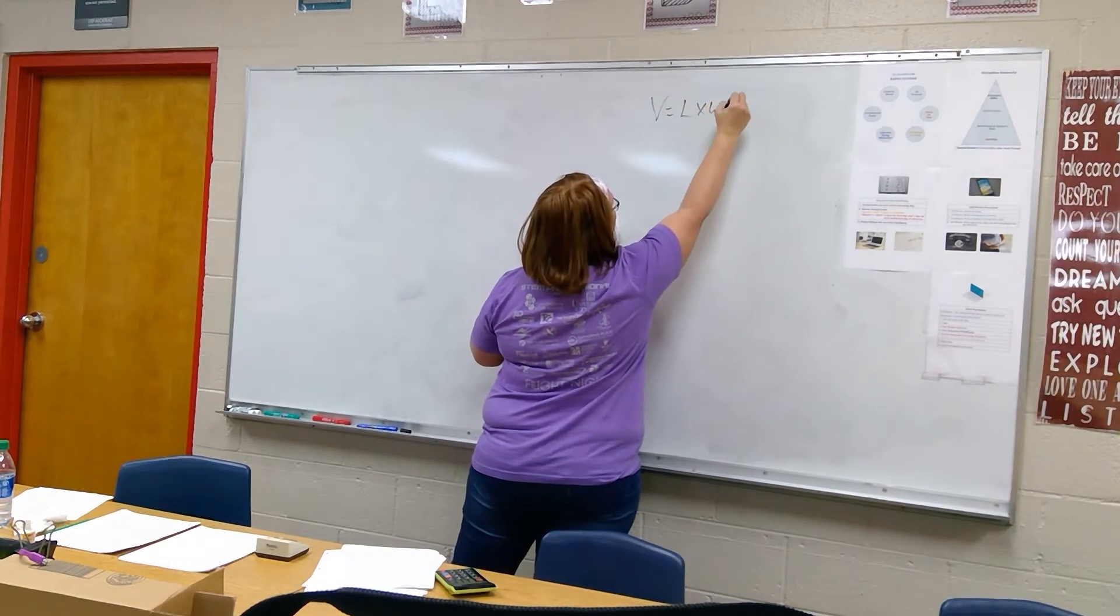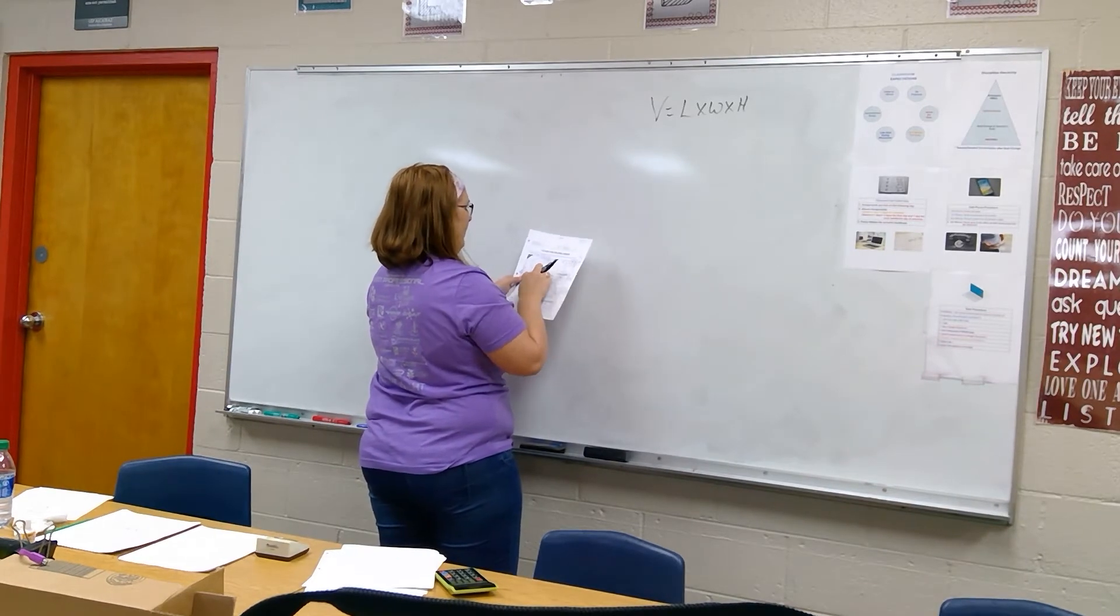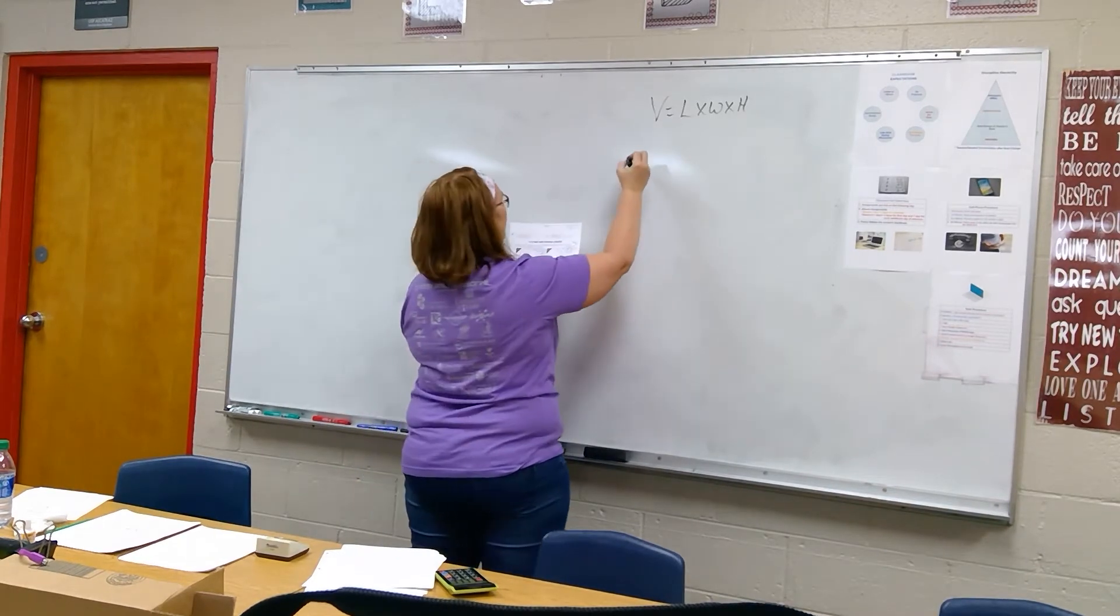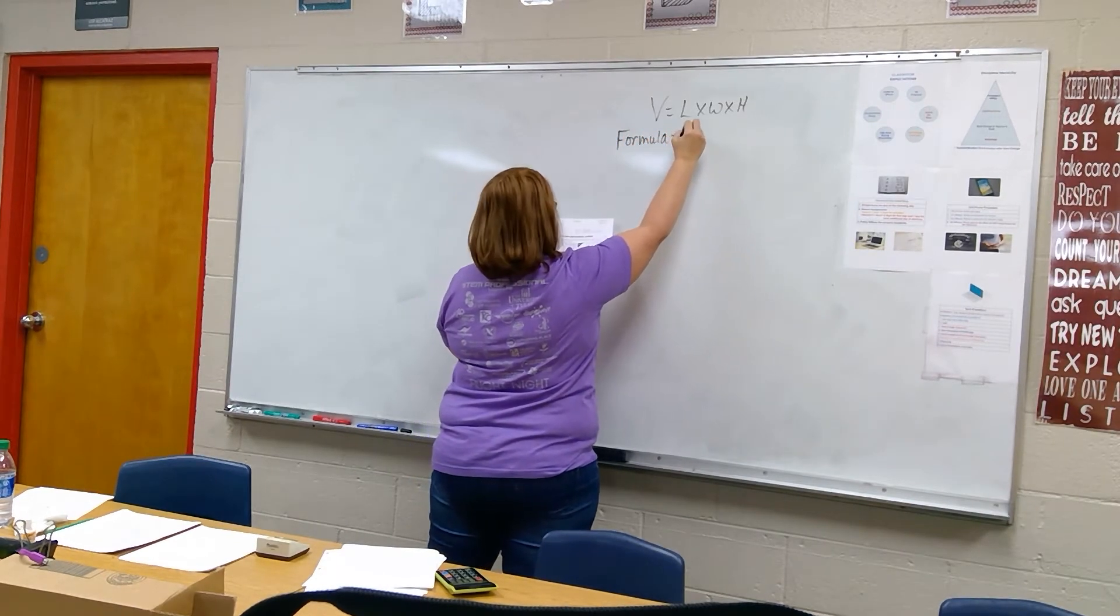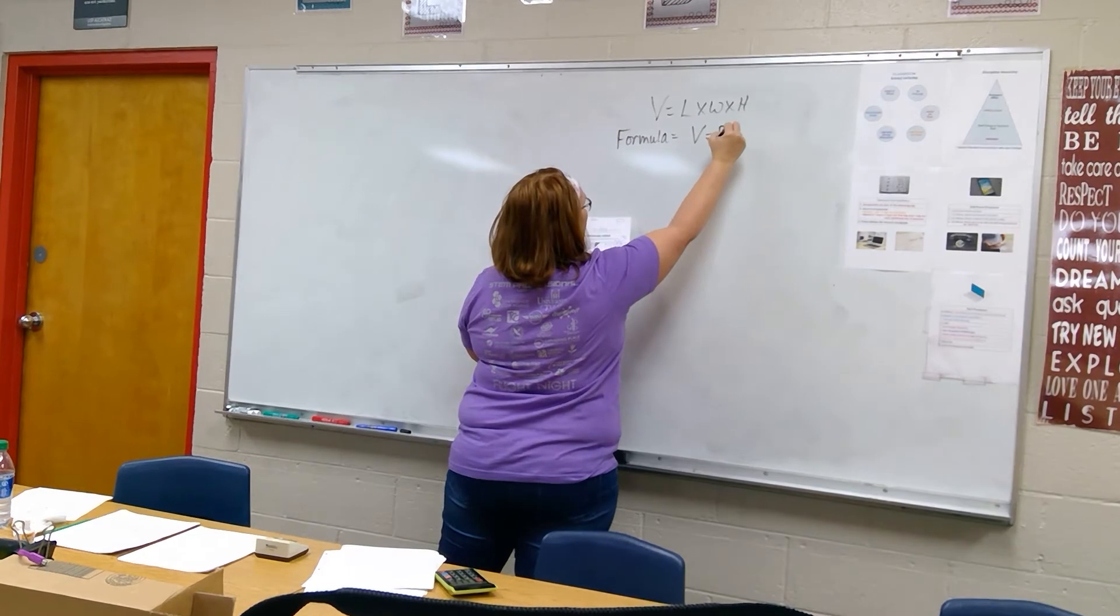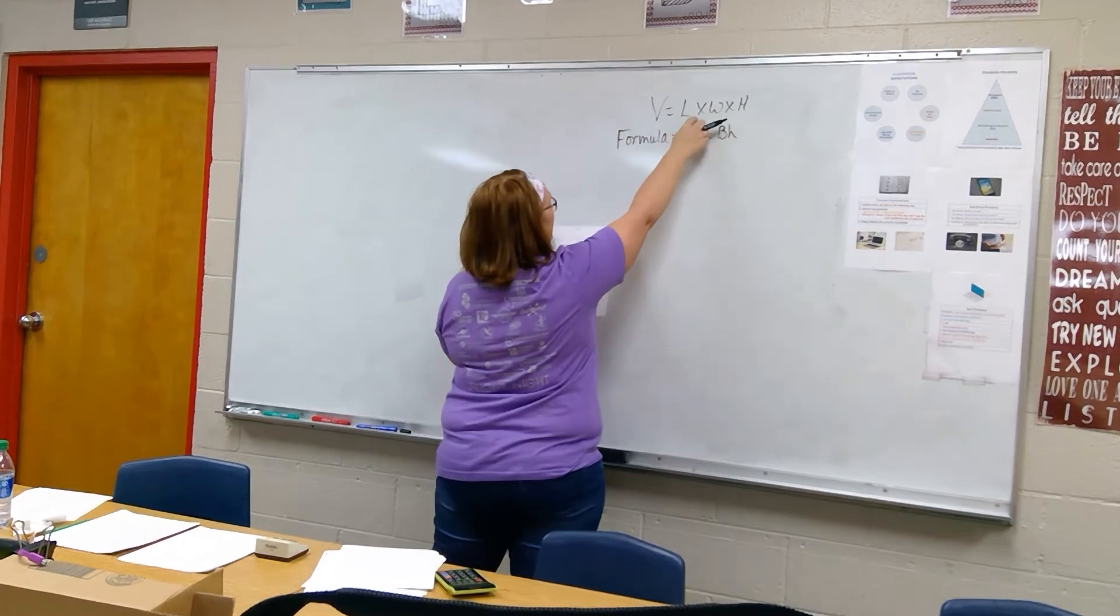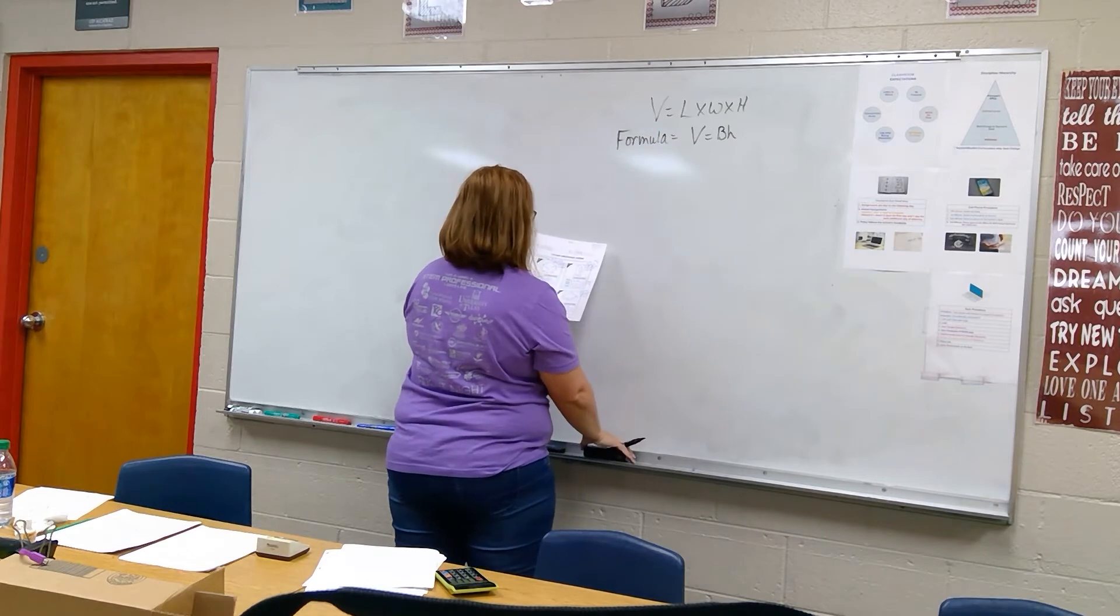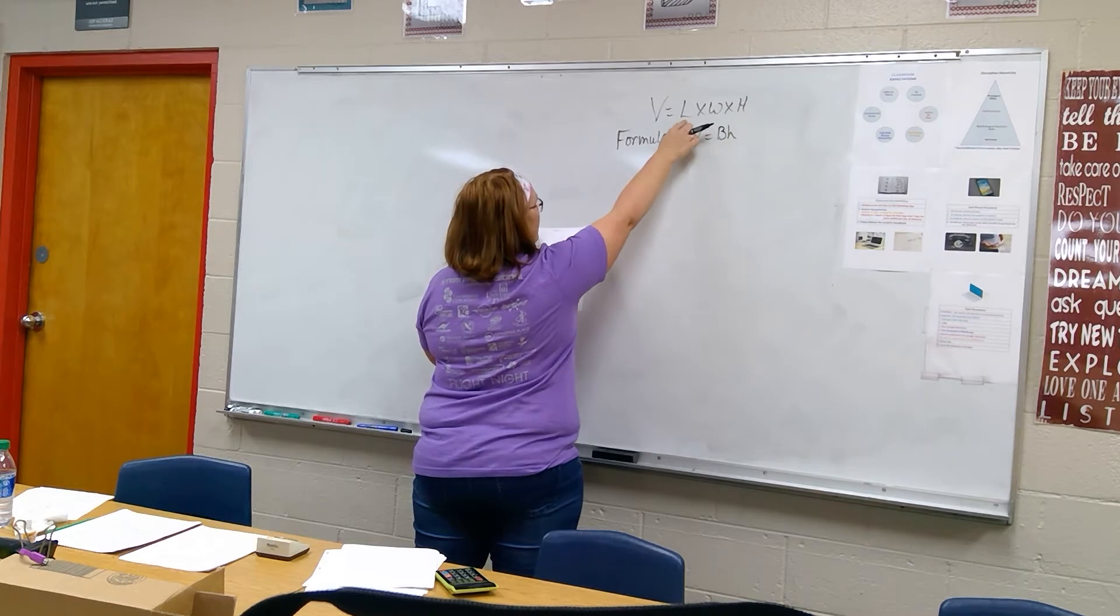Says formula they give you v equals bh. If you want to put for the formula v equals bh, then go right ahead. If it were me, I would be doing length times width times height, because otherwise you have to find out your b first then go back and plug it in. Just do length times width times height all the way across.